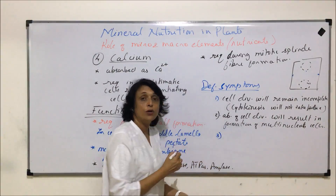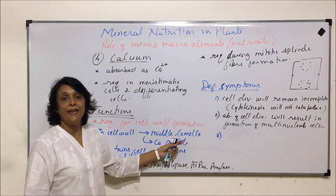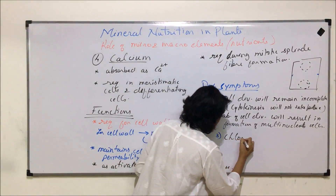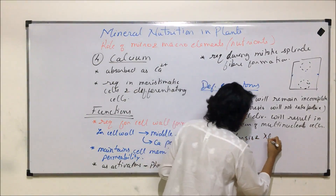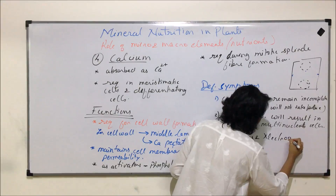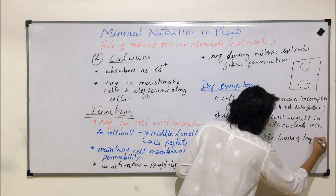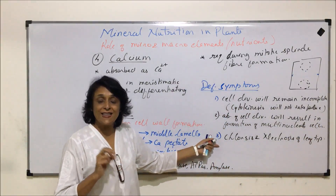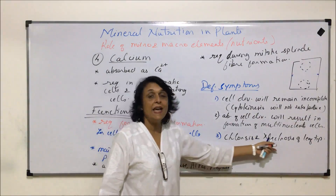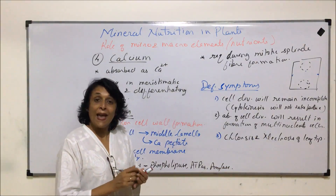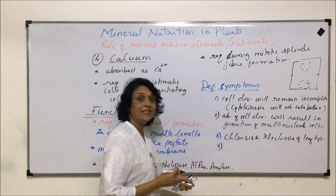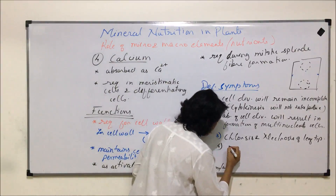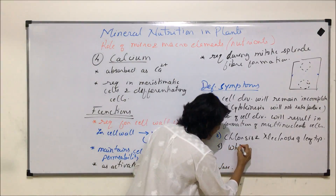The next important deficiency symptom of calcium is chlorosis and necrosis of the leaf tips. Chlorosis means the pigment chlorophyll is reduced and the tissue turns yellowish, while necrosis leads to death of the tissue. Due to permanent wilting, the tips become withered or bent, and this condition is known as withering.